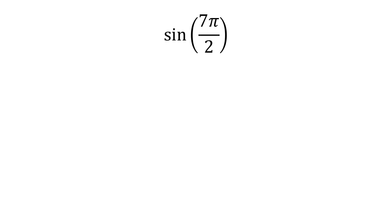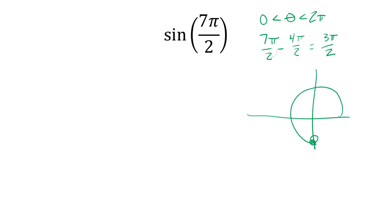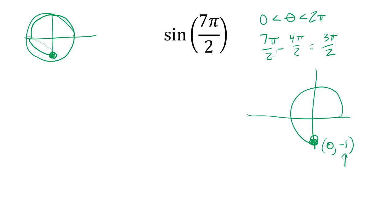The sine of 7π/2. Here 7π/2 is outside my 0-to-2π range for one rotation, so I subtract 2π — which is 4π/2 — and I'm left with 3π/2. So I'm really being asked: what is the sine of 3π/2? The coordinate there is (0, -1), so the y-value is -1.